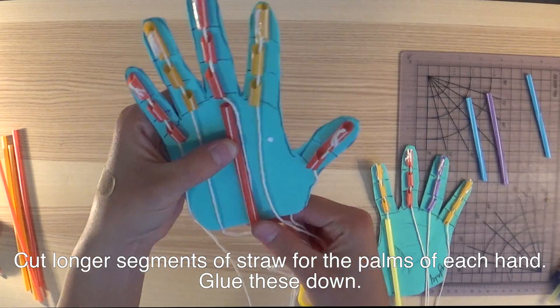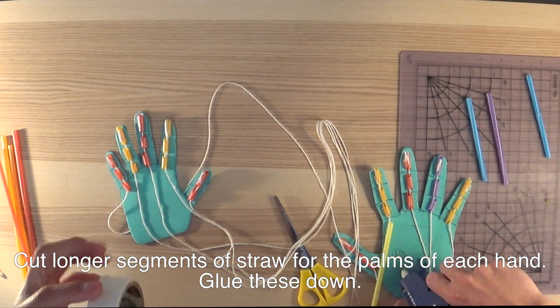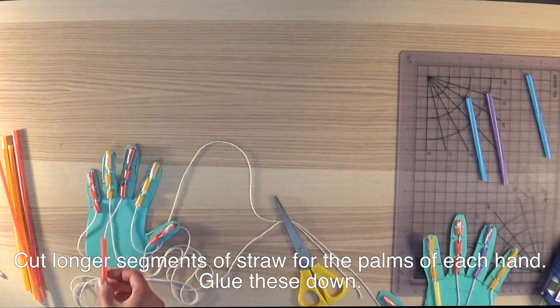Cut longer segments of straw for the palms of each hand. Glue these down. You do not need to cut triangles at the end of these straws.